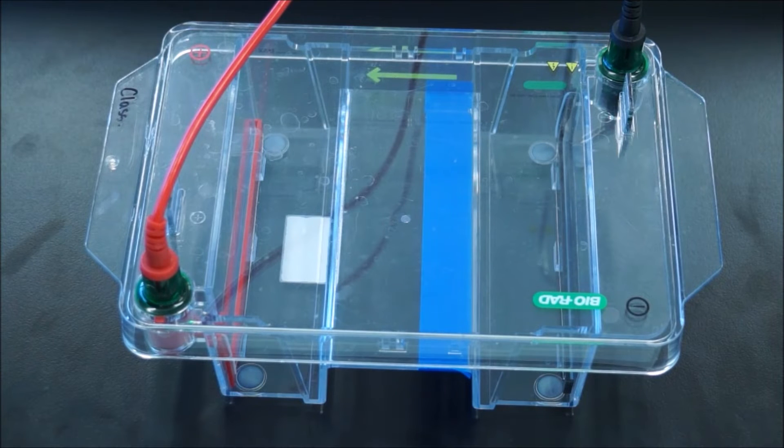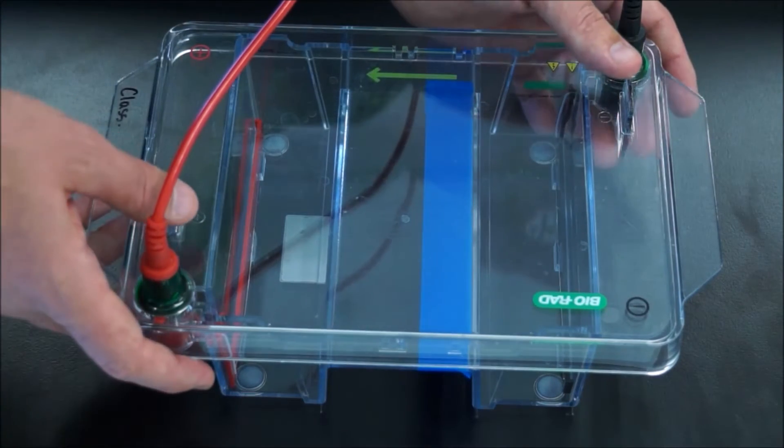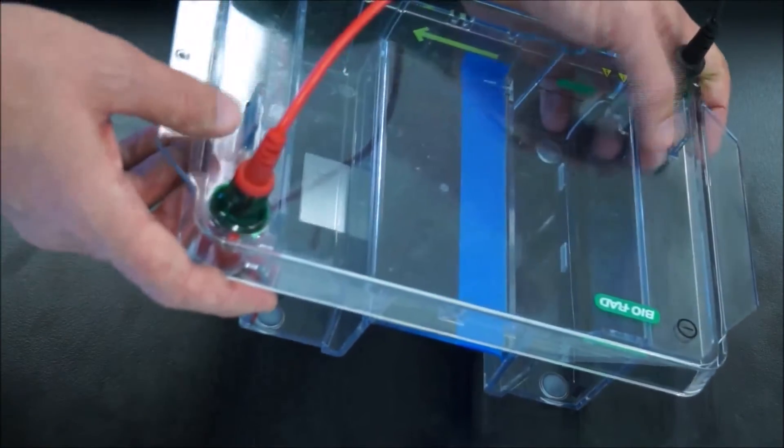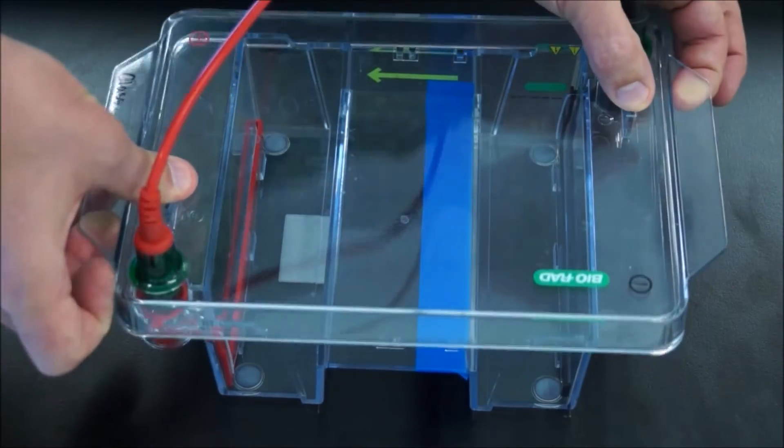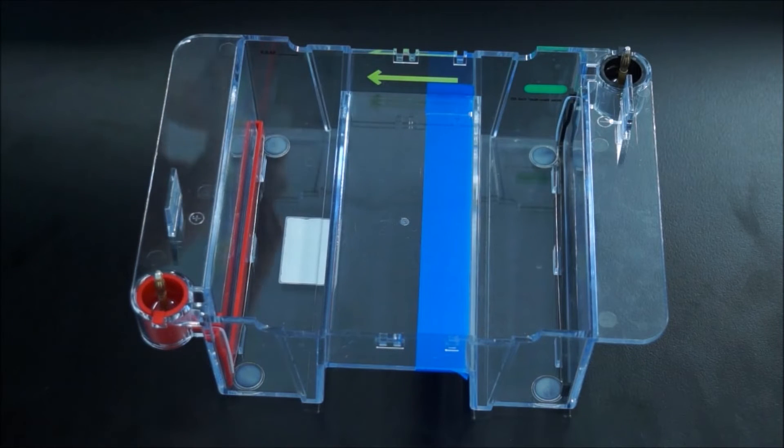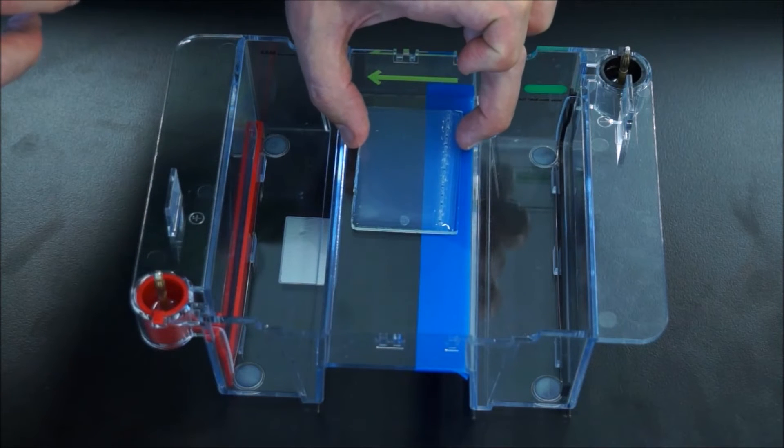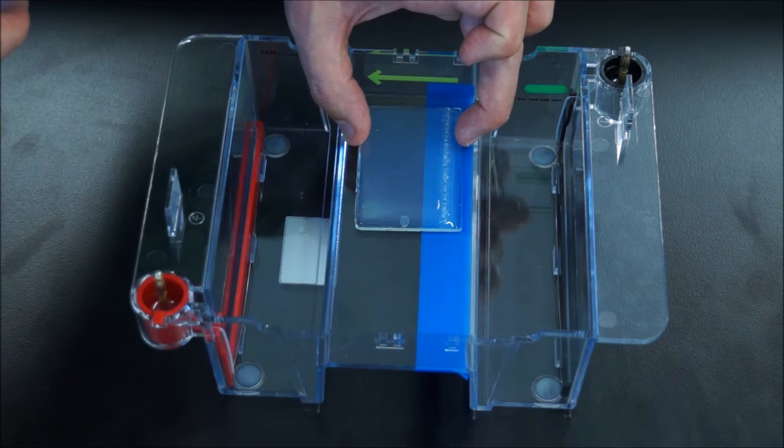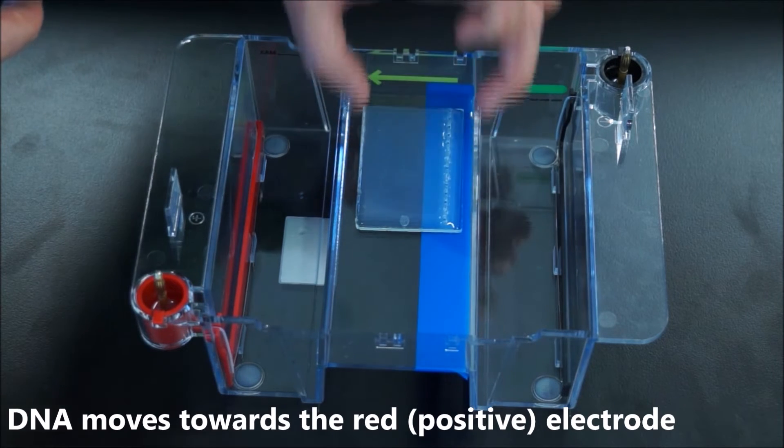Next thing to do is to set up your gel tank. Just pull the lid off. Most of them have little buttons on either side - just put your thumb on that and pull up with your fingers. Now you need to put your gel in so the wells are situated above the tape. This makes it easier to load and also gives you an indication of which way the DNA is going to move.